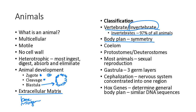Another important classification feature is the coelom, which relates to the body cavity. Animals are also classified based on the first opening in embryonic development — whether it is the mouth or the anus. If the first opening that forms is the mouth, it's a protostome; if the first opening is the anus, it's a deuterostome. Most animals reproduce by sexual reproduction, although some can reproduce asexually by budding or fragmentation.